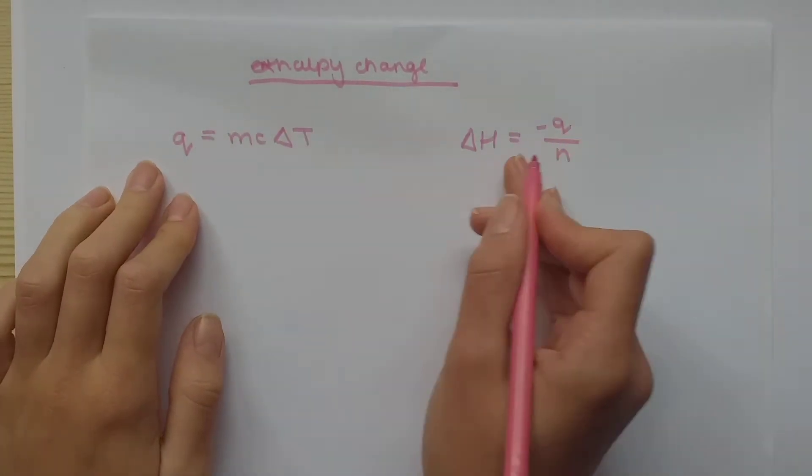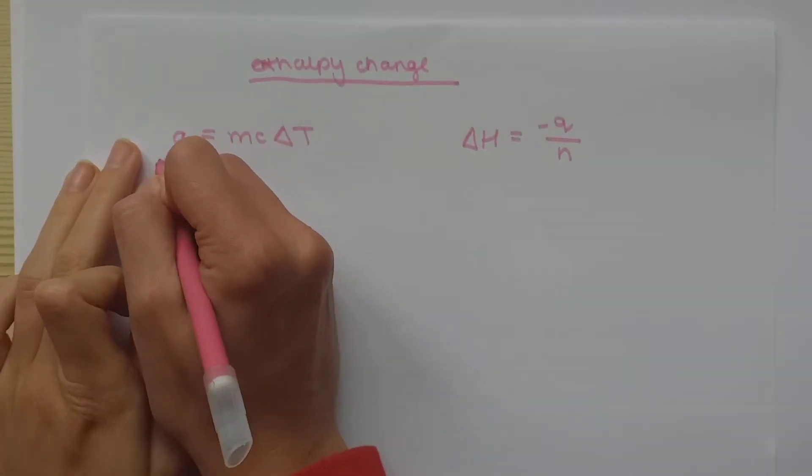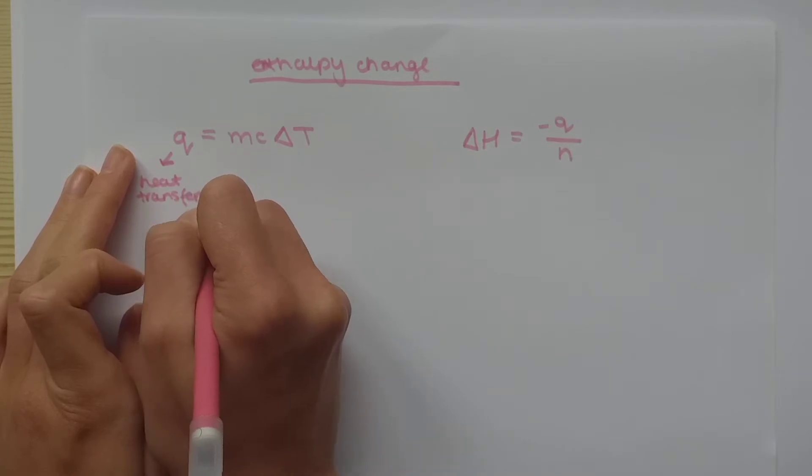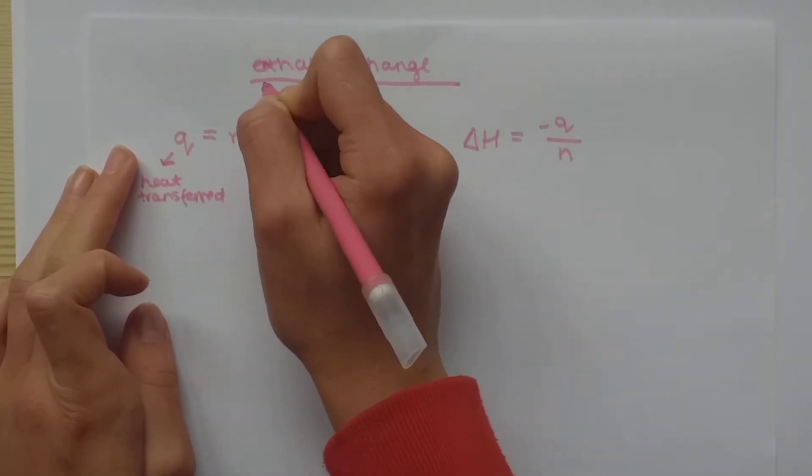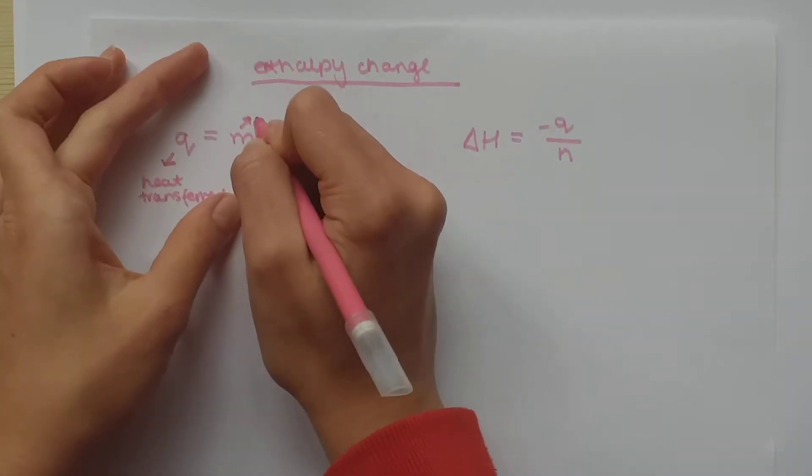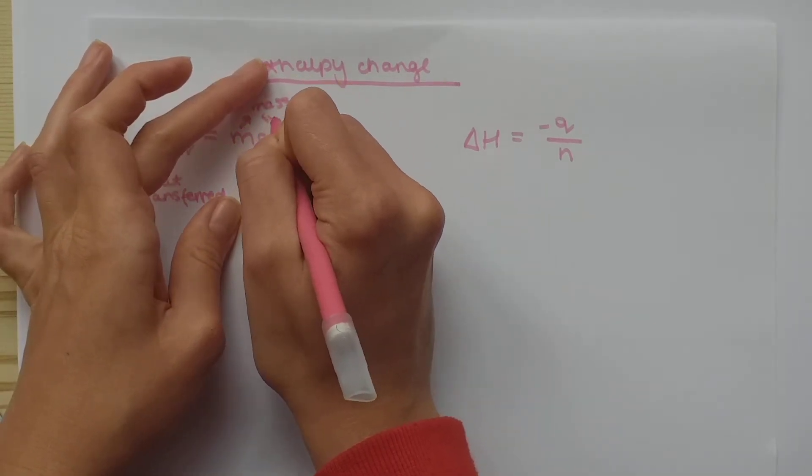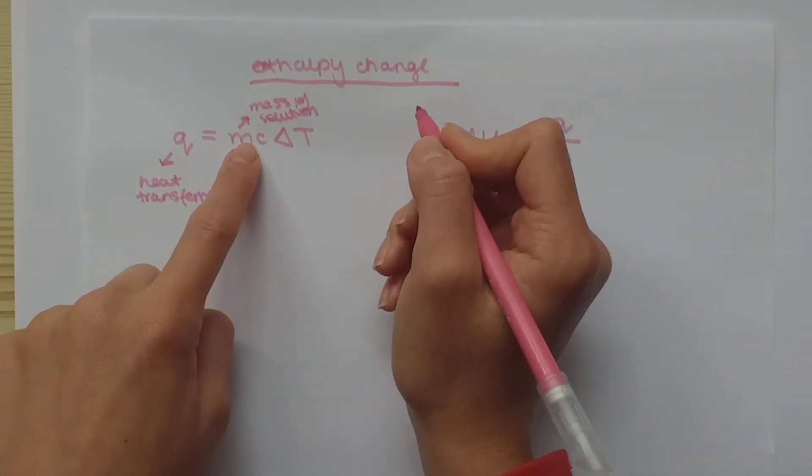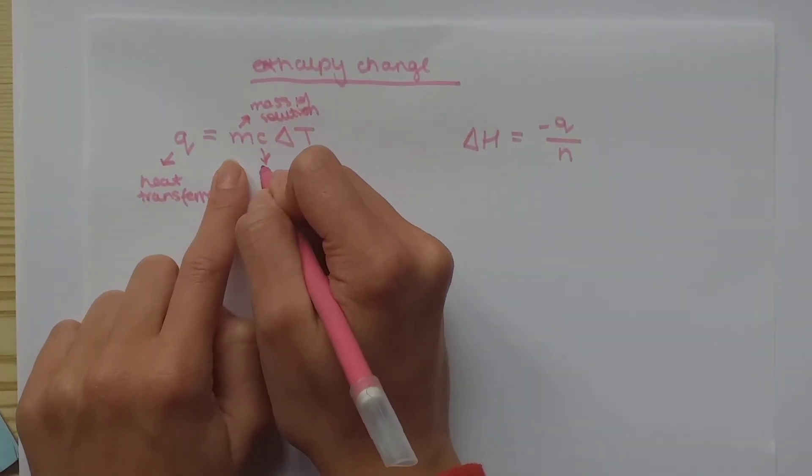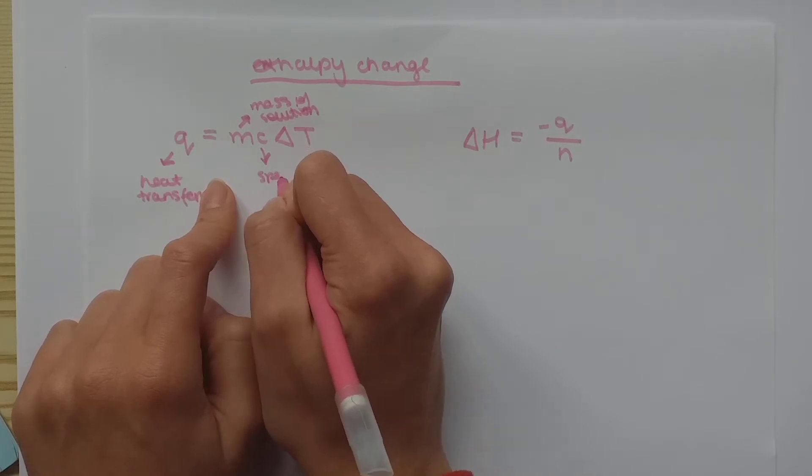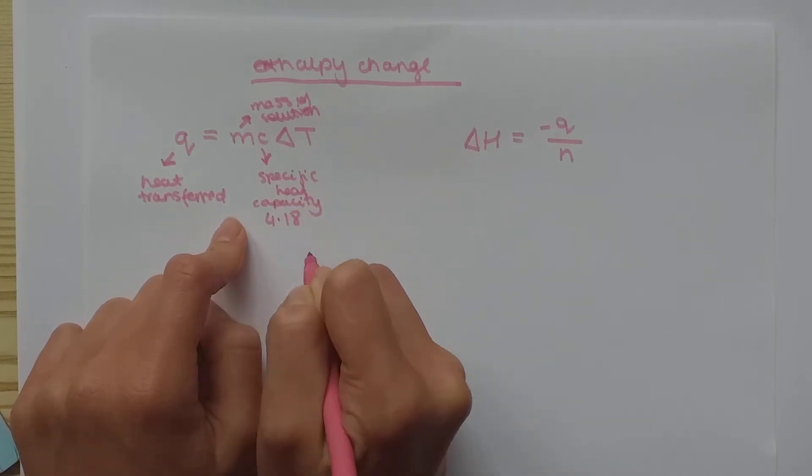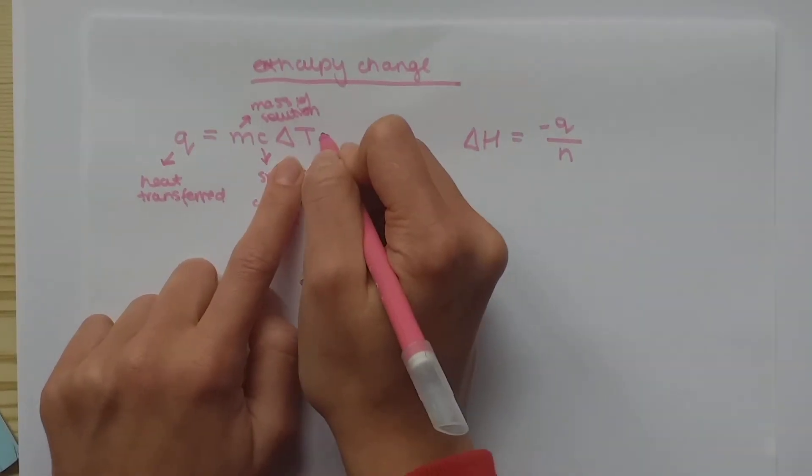So, let's explain these equations first. Q is your heat transferred. M is your mass, but it's the mass of solution, not the solid. C is your specific heat capacity, and it's a constant, 4.18. And lastly, your change in temperature.